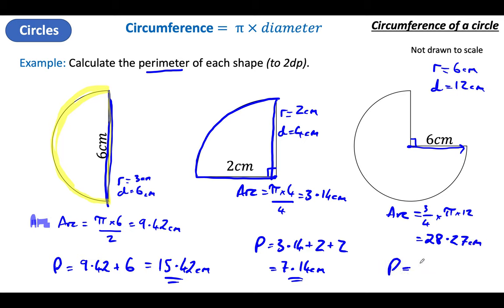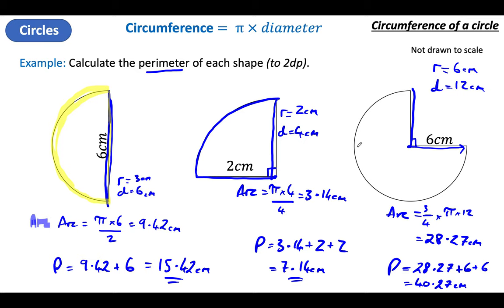My perimeter will be the arc plus the two flat bits — that's 6 centimeters and 6 centimeters — so plus 2 lots of 6 gives 40.27 centimeters. What you need to do on these ones is work out the arc — think of the whole circle and then find what proportion you want. Is it half of it? Is it a quarter? Or is it, in this case, three quarters of your circumference? Then don't forget to add your flat bits as well.